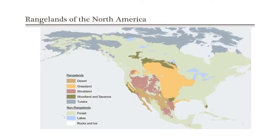What we're going to talk about today is part of the rangelands of North America. The Great Plains, which we talked about earlier in the class, are that whole big yellow blob in the middle of the continent. Now we're going to talk about some of these grasslands that are on the periphery — the California annual grasslands, and what I'm loosely calling the Intermountain Bunchgrass type.